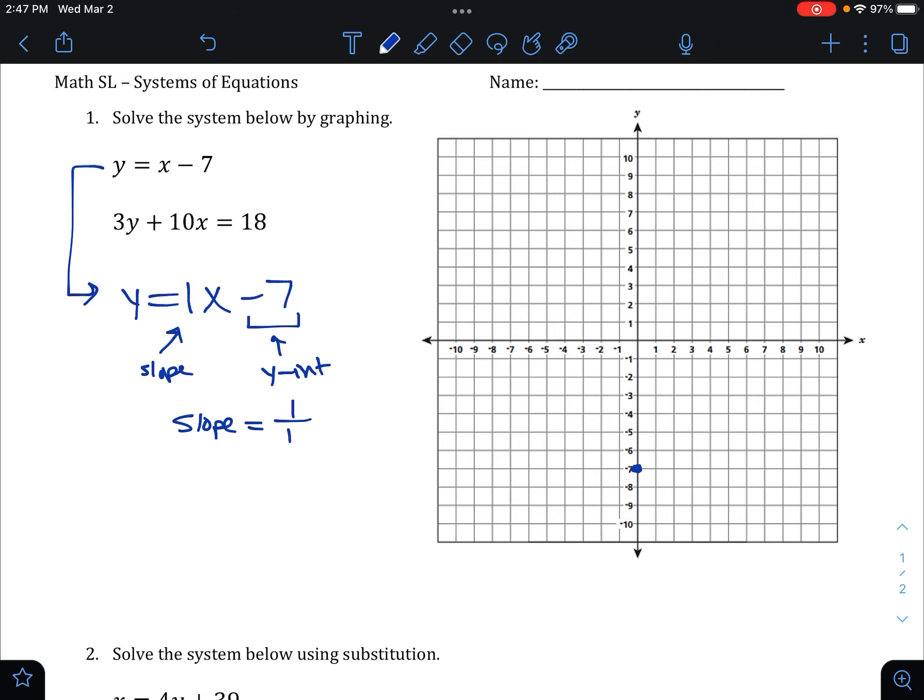So from negative 7, we're going to go up and right 1, up 1, right 1, up 1, right 1, using our slope's directions.